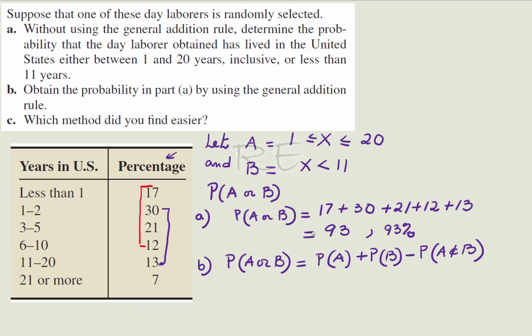Let us look at P of A. So for P of A, we have to add 30 plus 21 plus 12 plus 13, which is 76. So P of A is 76.